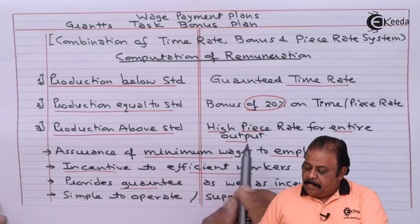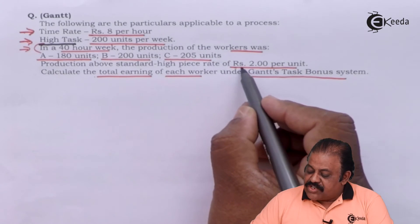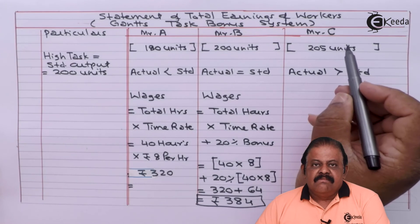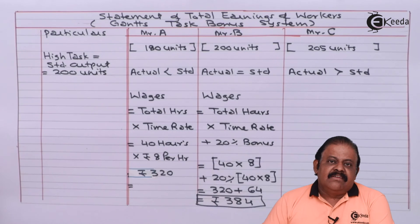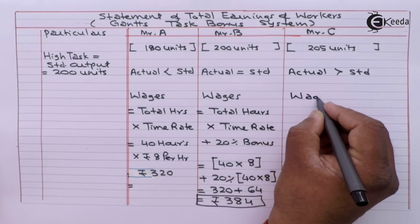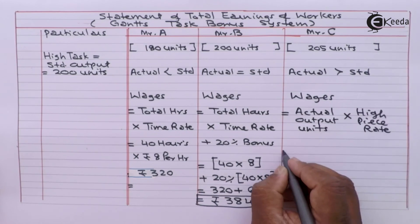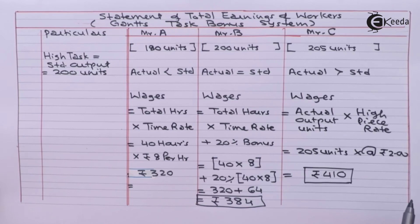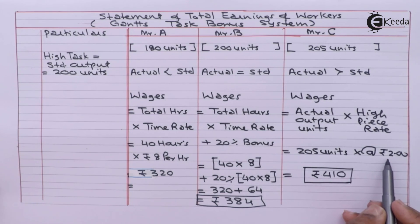Production above standard: high piece rate applies for the entire output. High piece rate is given in the question as rupees 2 per unit. In case of Mr. C, actual output is greater than standard output, so he will be paid according to the high piece rate. Mr. C will get wages of rupees 410 — that is, 205 units × rupees 2 per unit.